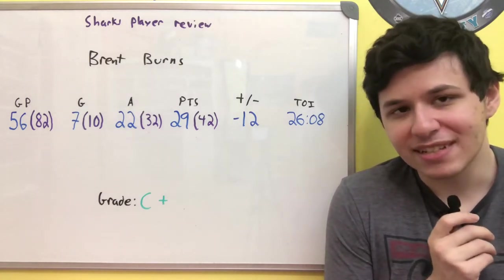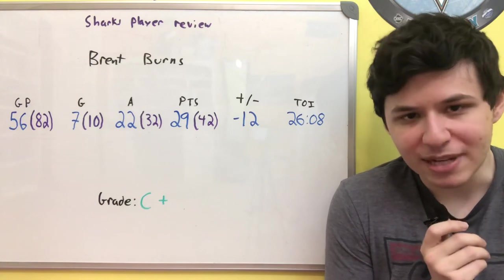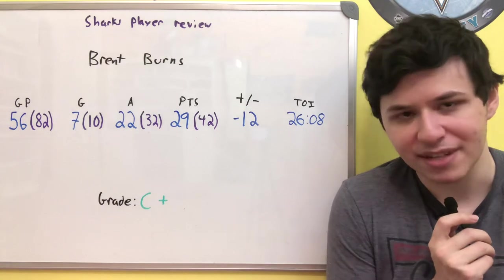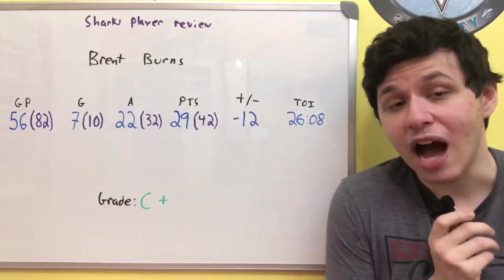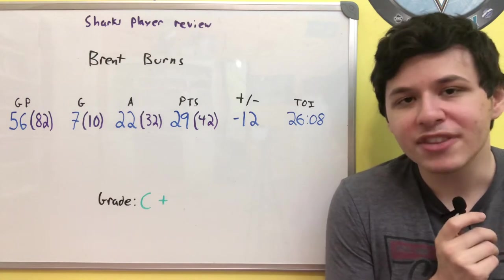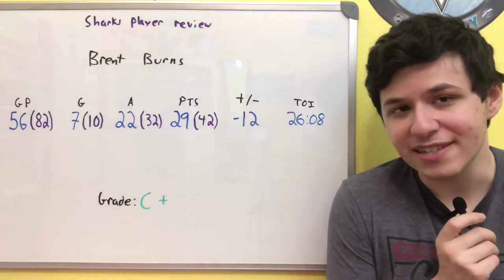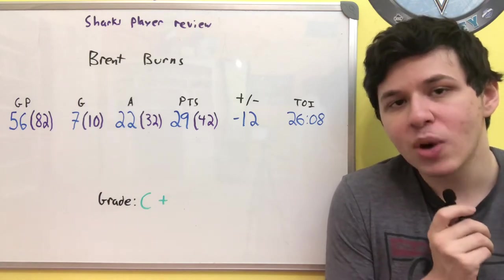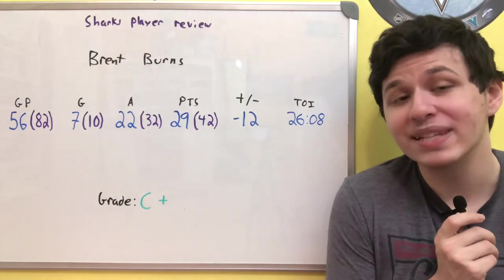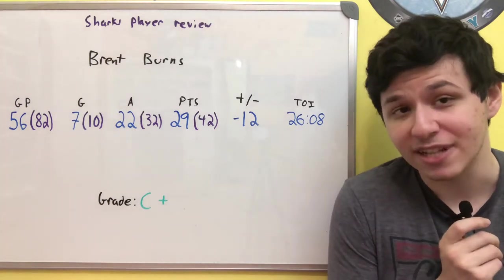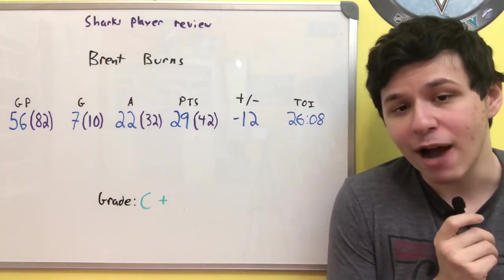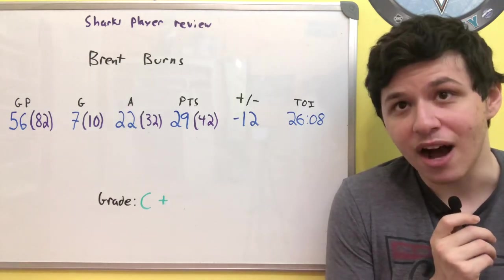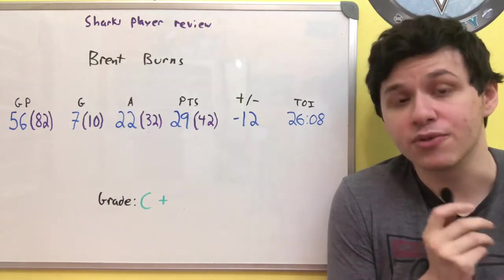Moving on to the stats: 56 games played, as Brent Burns has always been in the past, he is just a workhorse, plays every single game for the San Jose Sharks in essentially every single season that he's been on this team. Got a bit of an Ironman streak of his own going. 7 goals on the year, which would have been 10 in a full season, a bit low for Brent Burns, but as I already talked about earlier, it's to be somewhat expected. 22 assists, which would be 32 assists in a full season, and 29 points, which would be 42 points in a full season, which would have been his lowest point total output over 82 games since the 2011-12 season with the San Jose Sharks, which was of course his first year with that team.